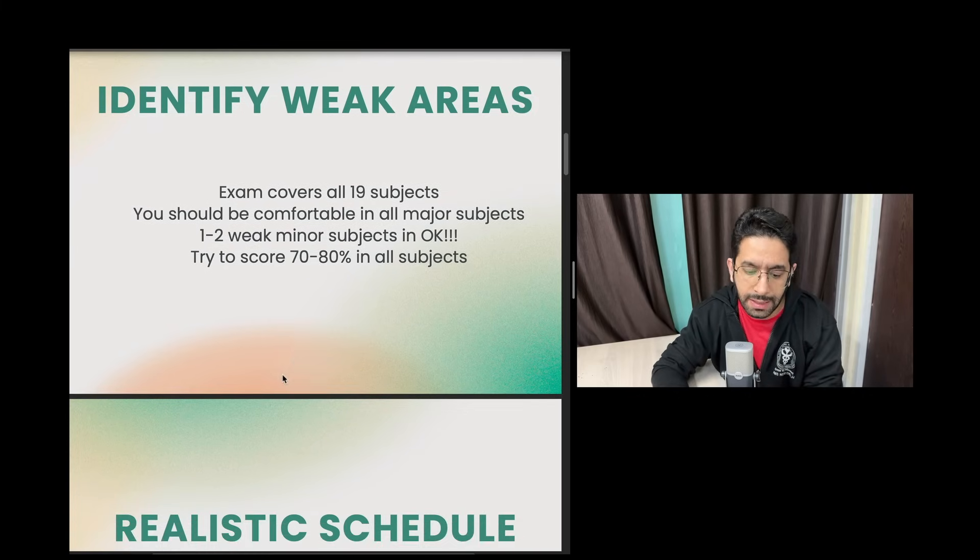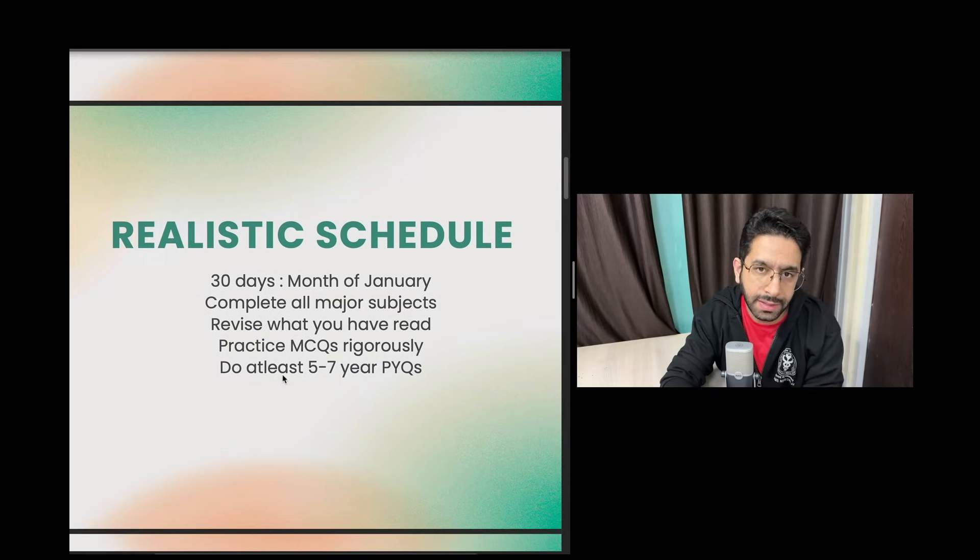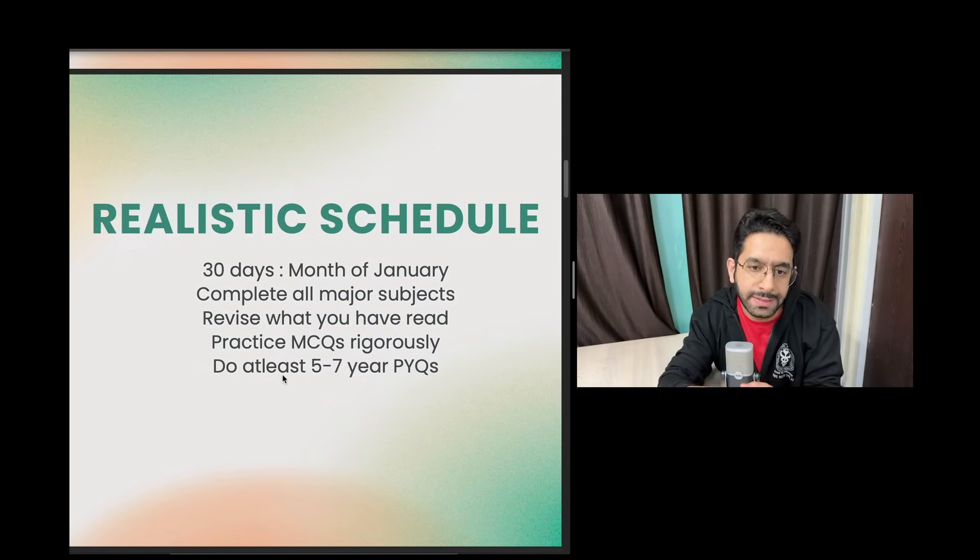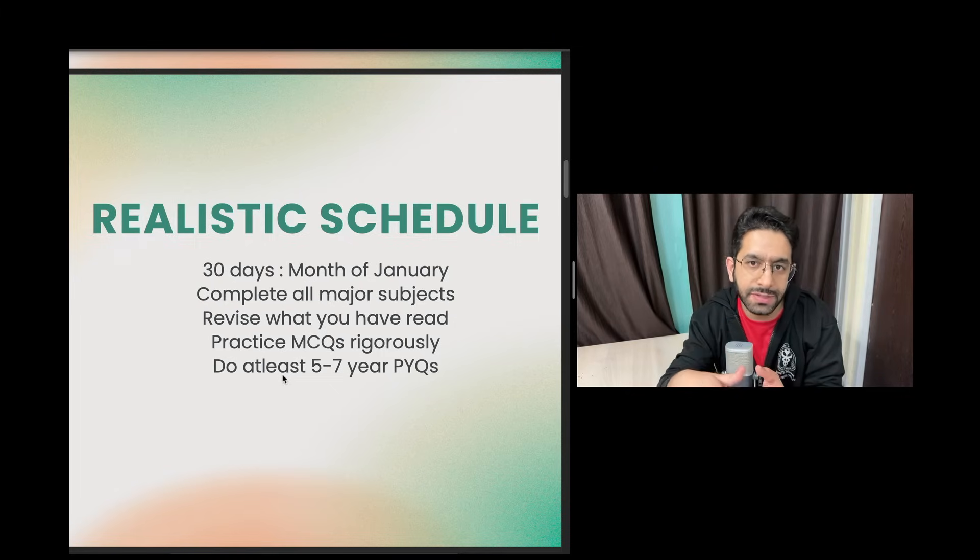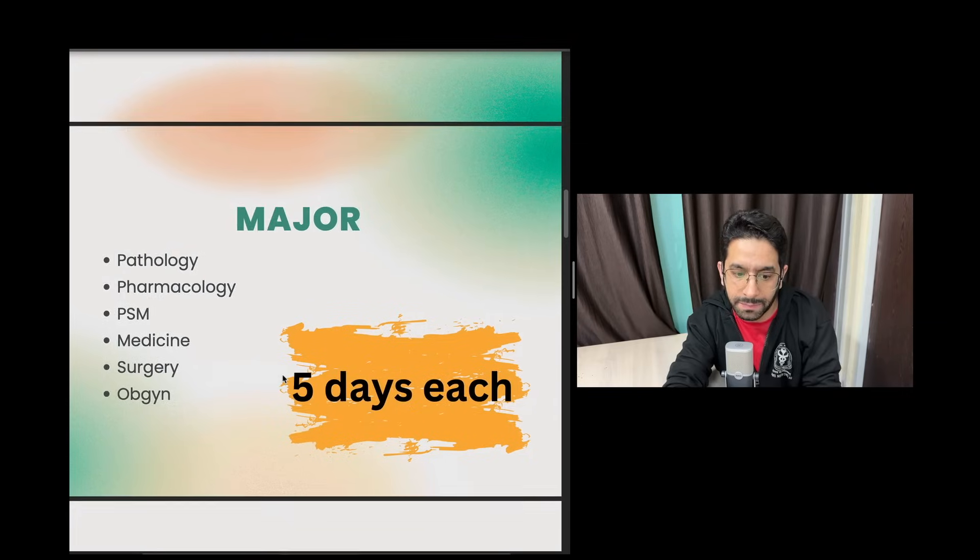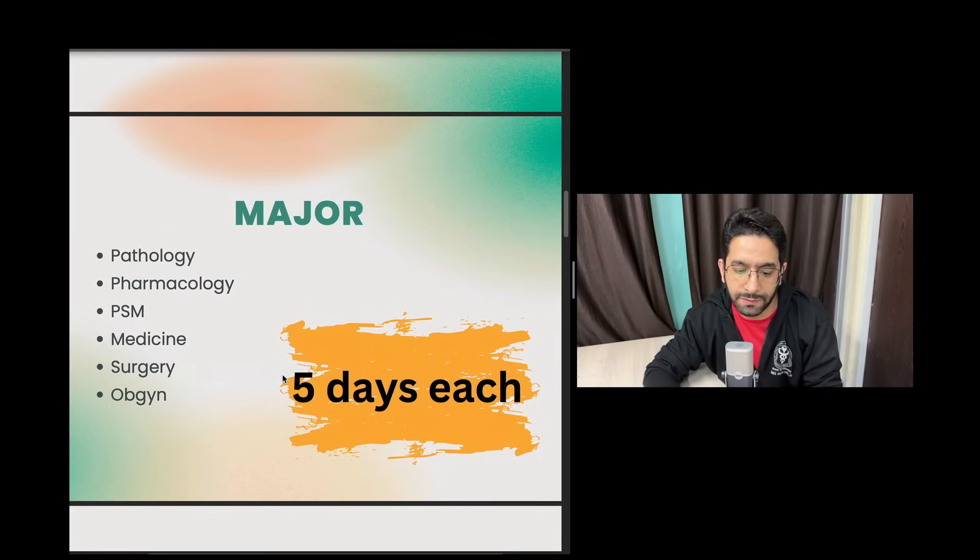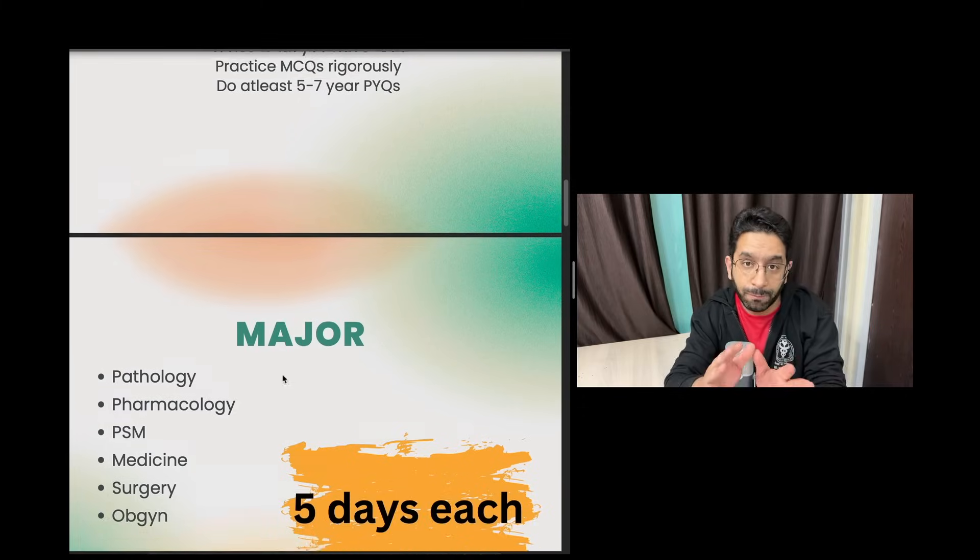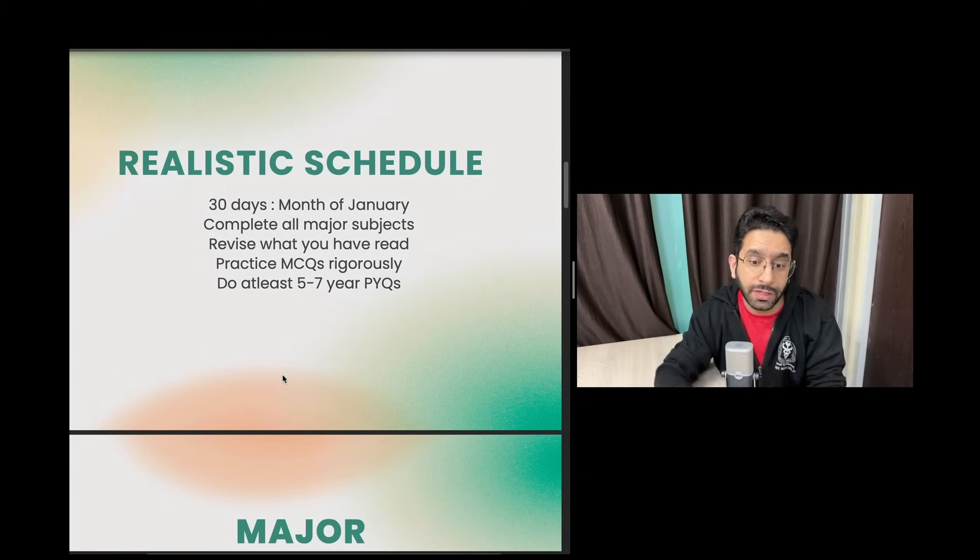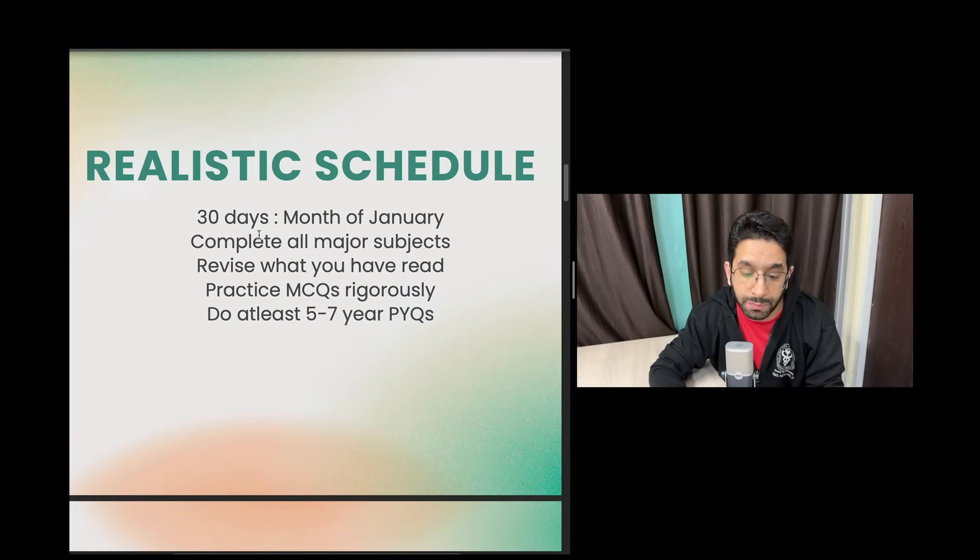I want you to have a realistic schedule in the coming two months. The first thing I would do for myself is in the coming 30 days, the month of January, I will master the major subjects. I will cover subjects like Medicine, Surgery, Pathology - I'll be highlighting in the next slide. These six subjects - Pathology, Pharmacology, Preventive and Social Medicine, Medicine, Surgery, and Obstetrics Gynecology - I'll be giving at least five days to each subject. So I master these six subjects in the coming 30 days, which means at the end of 30 days I should be comfortable with these subjects because they will form the biggest portion of your question paper.